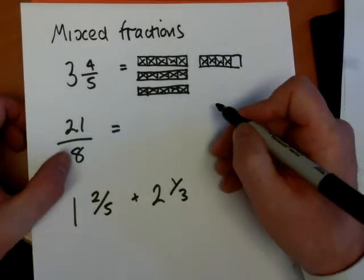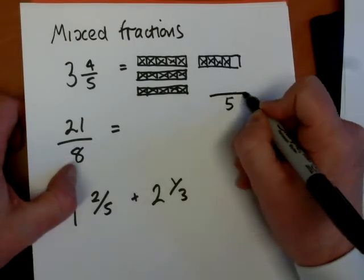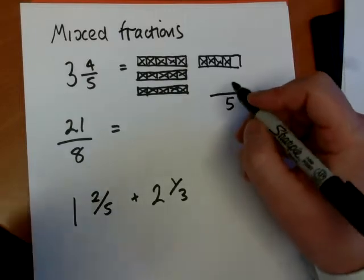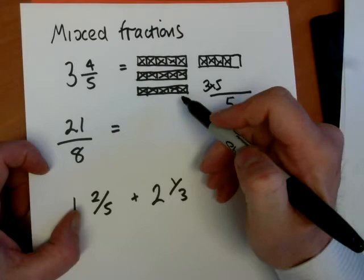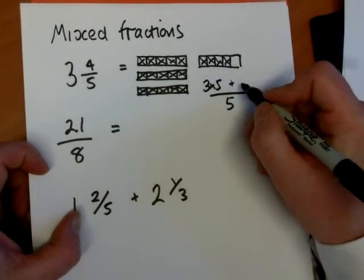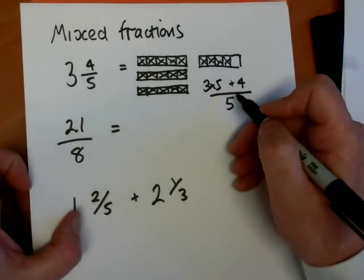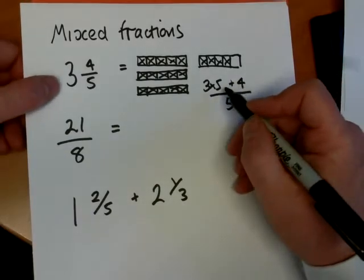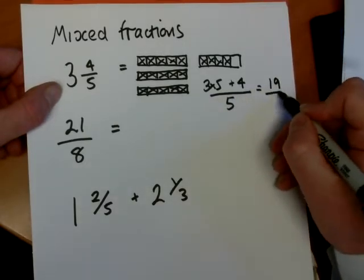So to write it as an improper fraction, that means it will be something over 5. We have to multiply 3 times 5 to get the number of fifths in the 3 bars. So that's 3 times 5. And then we have to add the remaining number of fifths in the last bar. So it's 3 fifths plus, sorry, 3 fives is 15 plus 4. So our answer is 19 over 5.